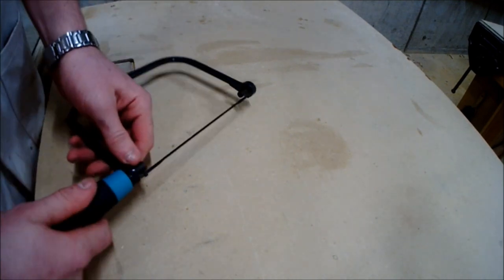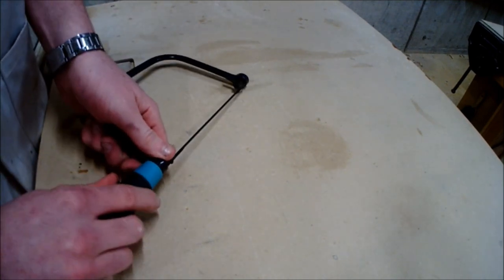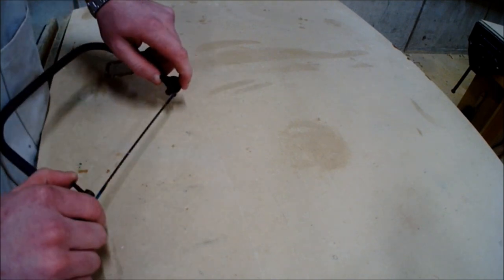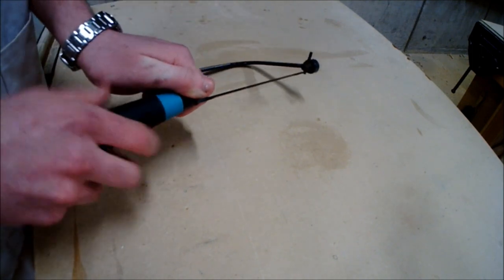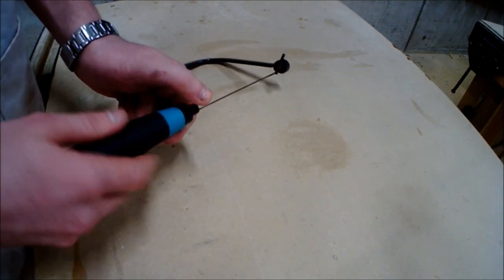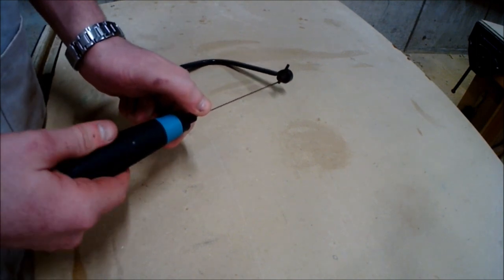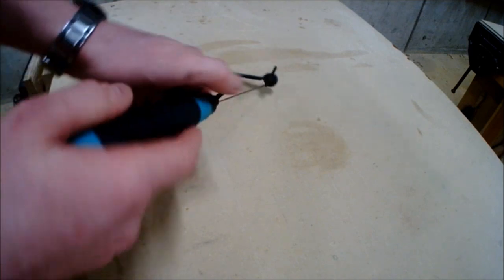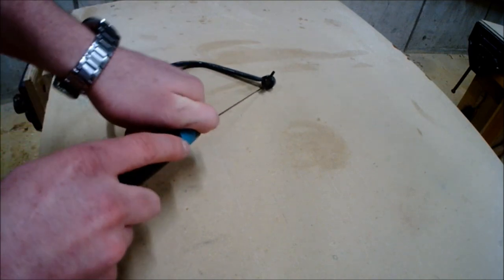The pins have to be perfectly in line with each other at all times to ensure that when you are cutting, the blade is perfectly straight and not twisted or warped if the pins were off-centered. As you can see, the pins can be adjusted around 360 degrees of the frame.